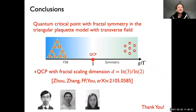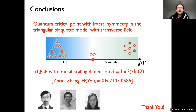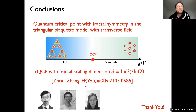To conclude, we have studied the triangular plaquette model, which exhibits a phase transition between a phase with spontaneous fractal symmetry breaking for small transverse fields and a paramagnetic phase for large transverse fields. These two phases are separated by a continuous quantum phase transition, and this quantum critical point is described by a fractal scaling dimension. Let me thank my collaborators for this very nice collaboration, and thank you for your attention.